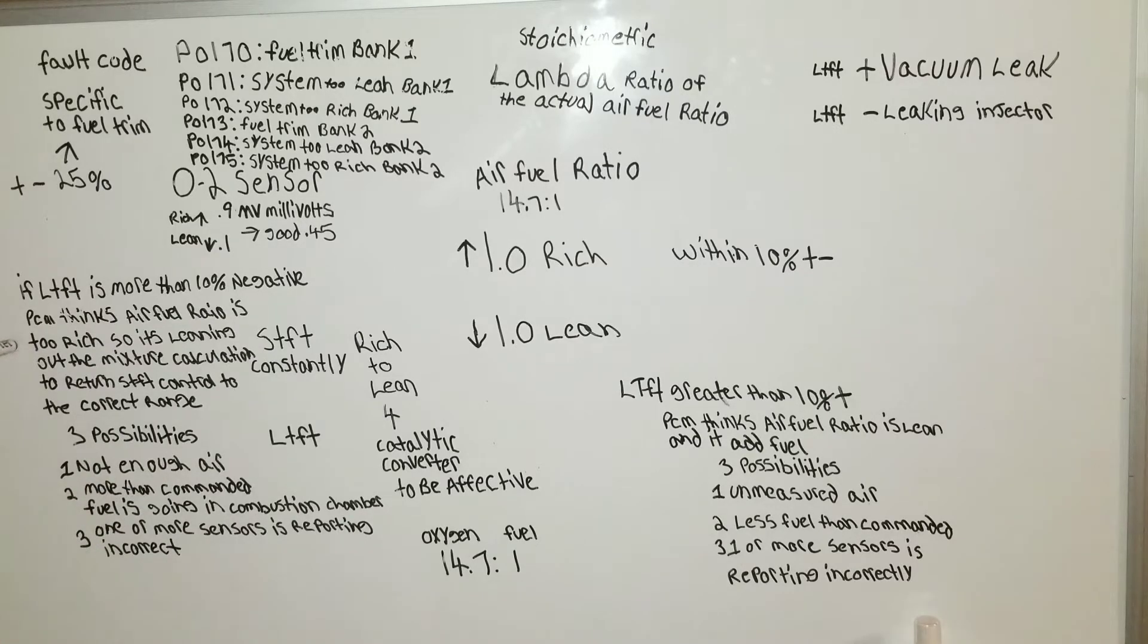So what this means is, if you have a negative fuel trim of over 10%, our fuel ratio is too rich, so the computer is leaning it out to put it where it's supposed to be, meaning there's a reason it's causing this, and that is three possibilities.